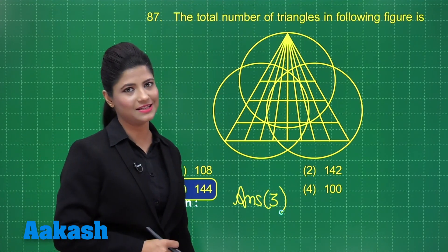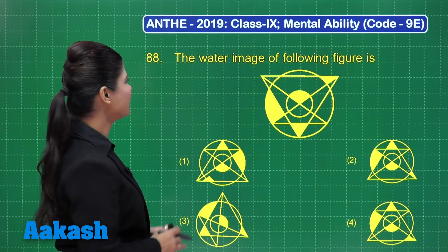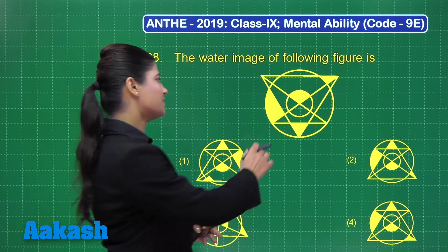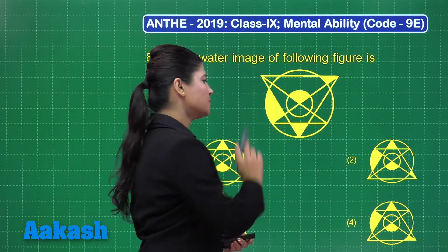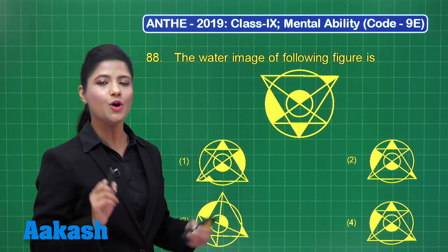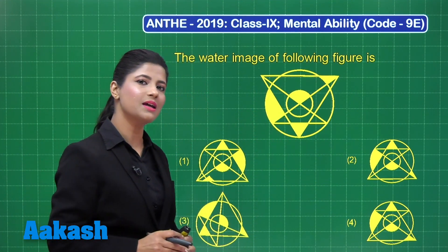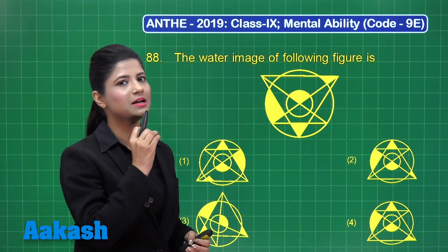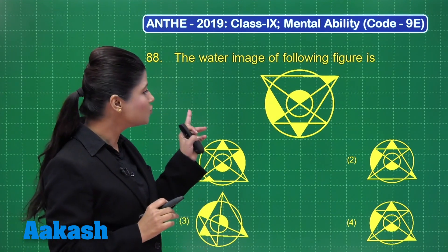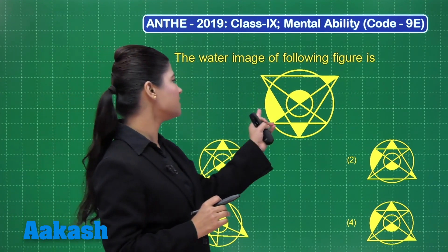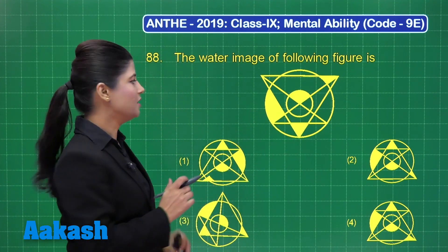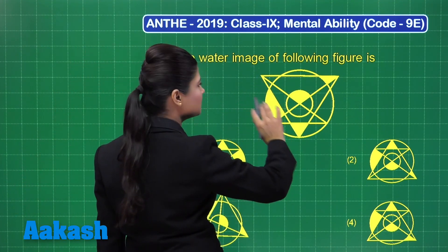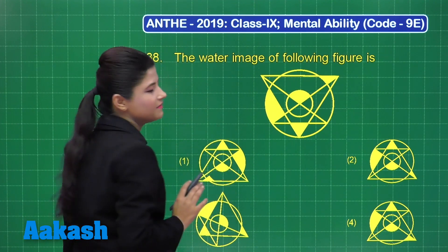Let us take up question number 88. This question states the water image of the following figure is. This is the figure given to us and you need to obtain its water image. In case of a water image, the top becomes bottom and bottom becomes top. But there is no change in the left and right portion — the image appearing on the left hand side will remain on the left hand side.